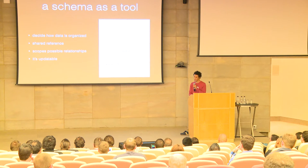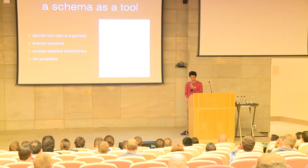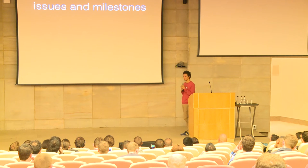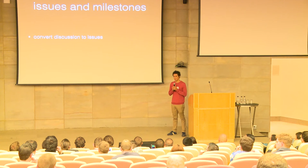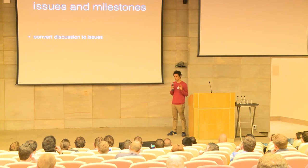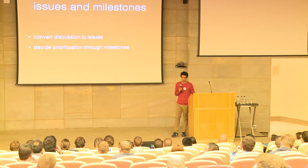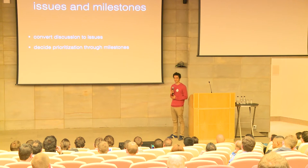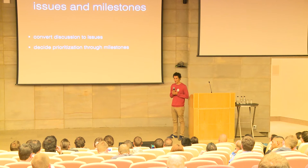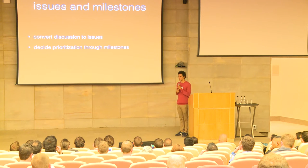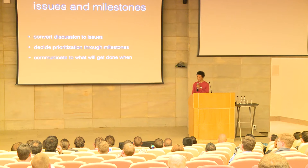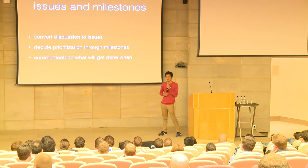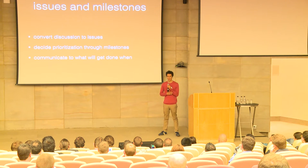We have our problem, we know the core functionality, we have a representation of the data, and now we can start figuring out what we need to do. We convert all of these discussions into issues — into small chunks of work that we can get done, separable chunks that can be made into isolated modules. We figure out how those modules relate to each other, what depends on what, what is higher priority, what can we get done sooner to show them something they can critique. At every step, we communicate with them and describe the issues we were working on, why these were important, and how they related to future functionality.